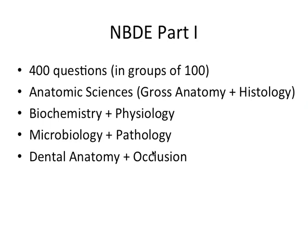Now the sections of 100 are not grouped by these topics. They're all mixed together — you'll get a gross anatomy question, then two biochemistry questions, then a pathology question, and so on.